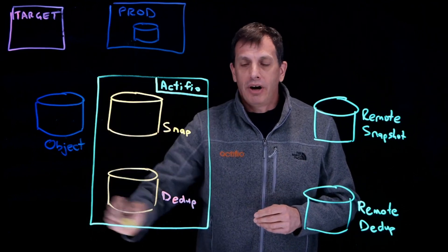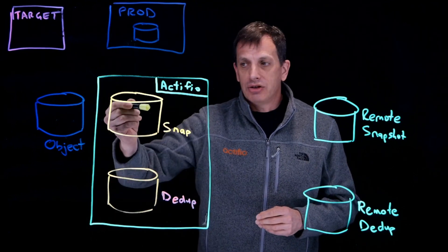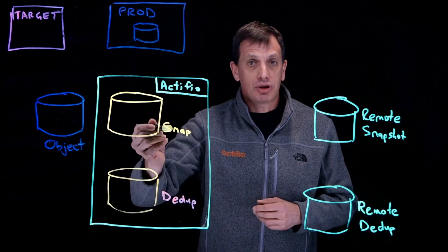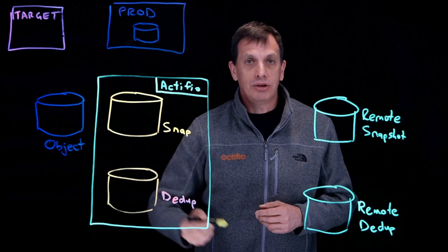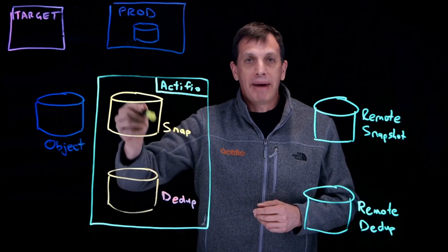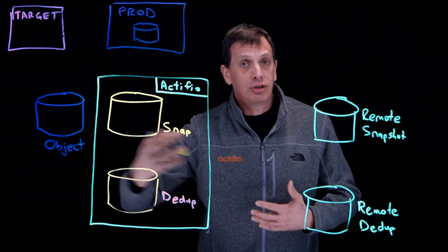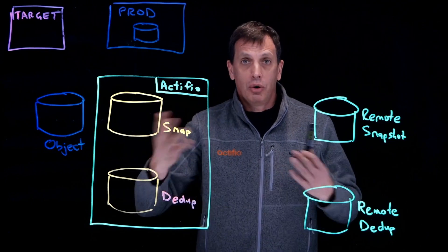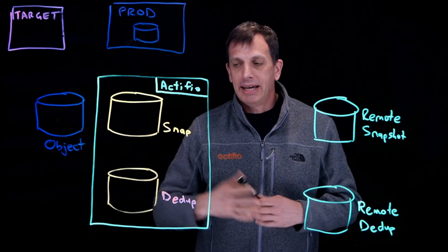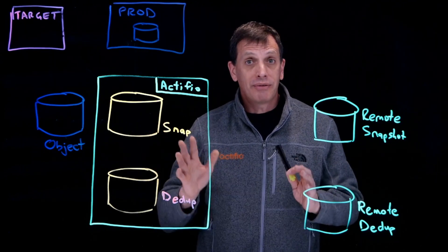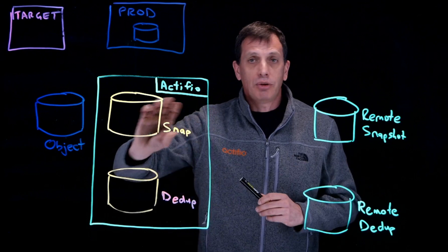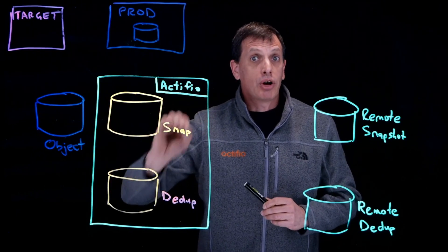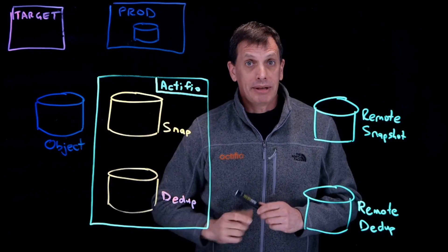An Actifio appliance normally has two major pools for holding golden copies of data: a snapshot pool and a dedupe pool that are made up of disks mapped to the appliance, whether it's from a hypervisor or whether it's from a direct fiber channel disk. The Actifio appliance turns some mapped disks into pools and this is where we're going to store our golden copies.